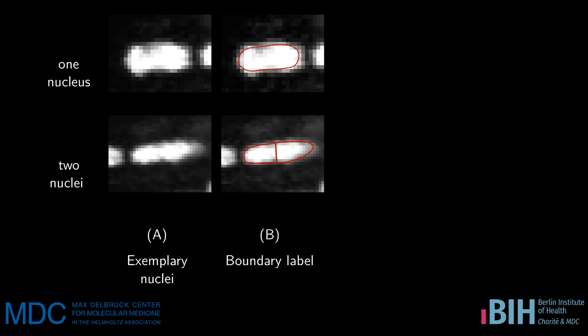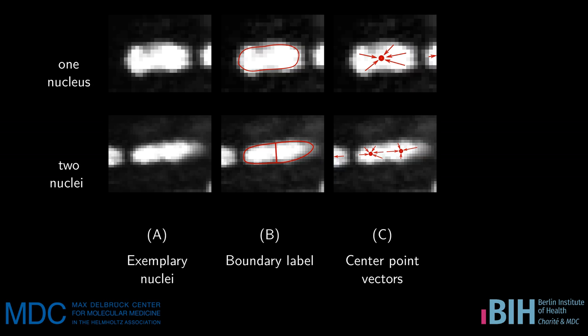Our idea was to use a popular approach from machine learning, namely using an auxiliary task or multitask learning. The idea is to get better at the main task by learning an additional task that is related to the main task, which helps to guide the network towards a good solution. Our approach is to learn vectors from each pixel to the center. This in itself is not new; however, these vectors have been used both during training and during inference. We only use them during training, thus not requiring any changes to existing post-processing pipelines, making it easier to integrate into existing systems.